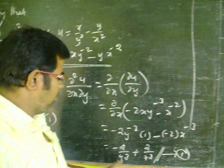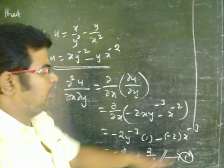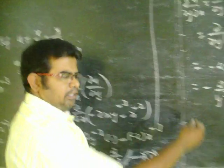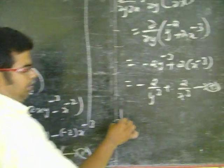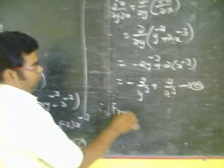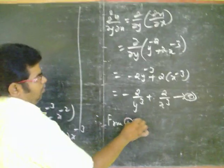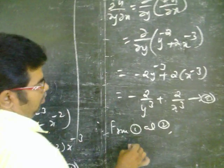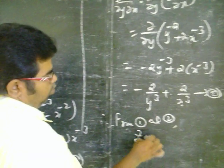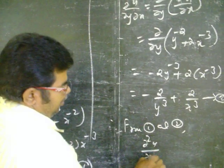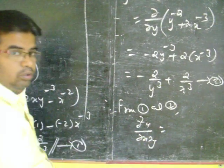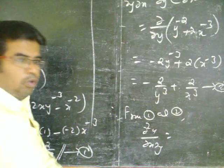From results (1) and (2), both equal minus 2/y³ plus 2/x³. Therefore ∂²u/∂x∂y equals ∂²u/∂y∂x, and the result is verified.